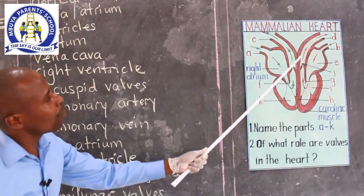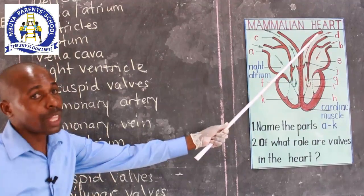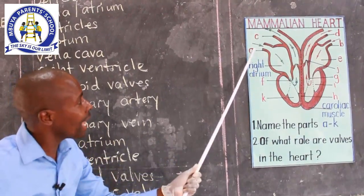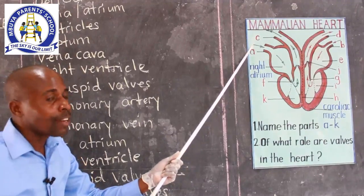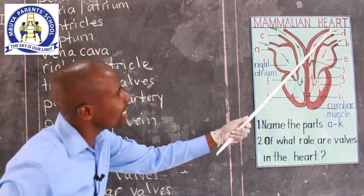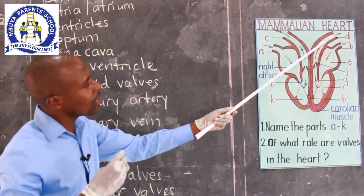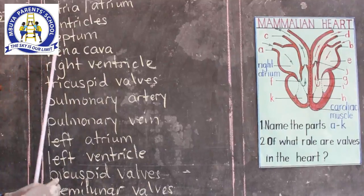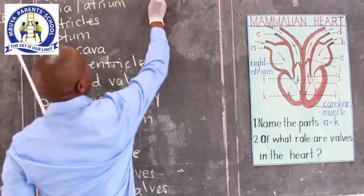Blood continues to go back to the body. Remember vessel A brought blood from the body. Now this vessel is taking blood to all other body parts — it is our main artery, and it is called the aorta.